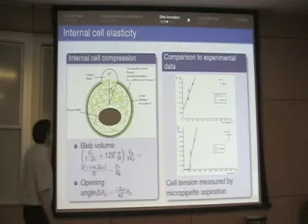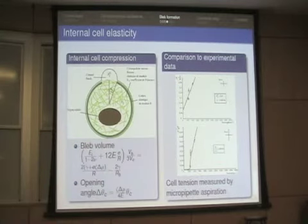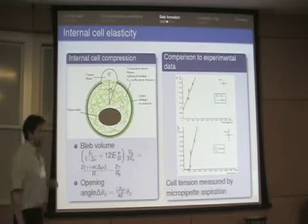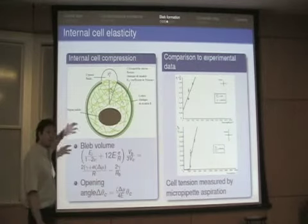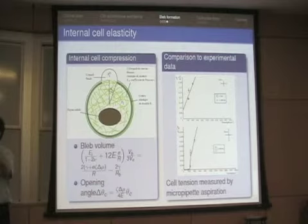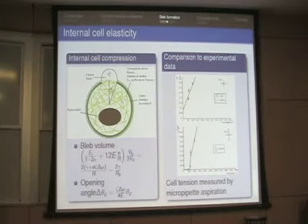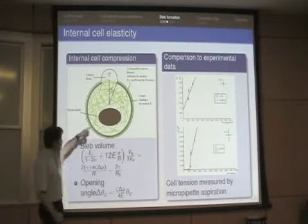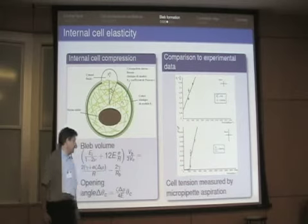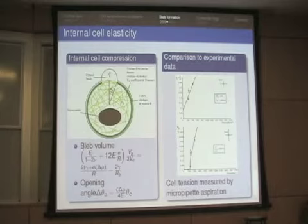We assumed that inside the cell there is not only liquid but also an elastic modulus. It's clear the cell interior is extremely crowded — it has membrane structures, and compressing them requires energy. Adding this term, the bleb equation now gives something reasonable: the extra opening due to tension is proportional to activity and proportional to the opening angle of the bleb.